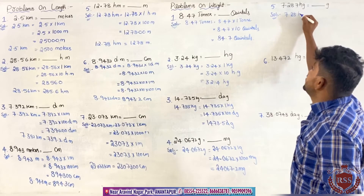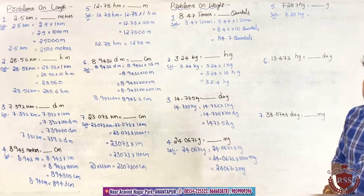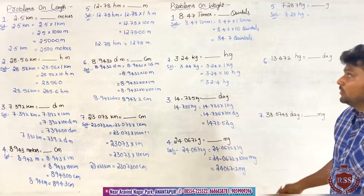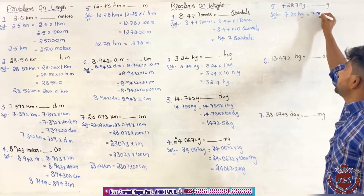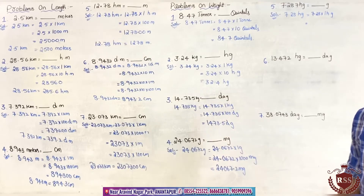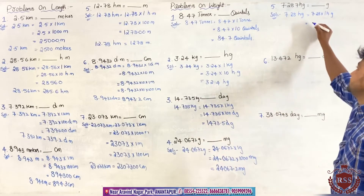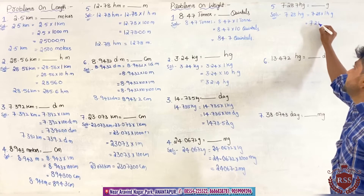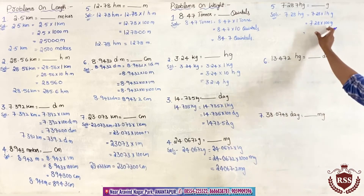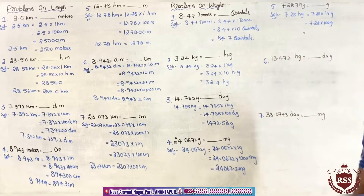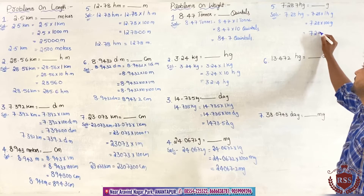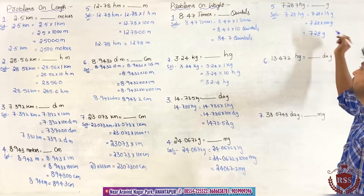Next: 7.28 hectograms has to be converted into grams. 7.28 into 1 hectogram — 1 hectogram equals 100 grams. So 7.28 into 100 grams. Here we have equal decimal values and zeros, so we can remove the decimal point. It will be 728 grams.